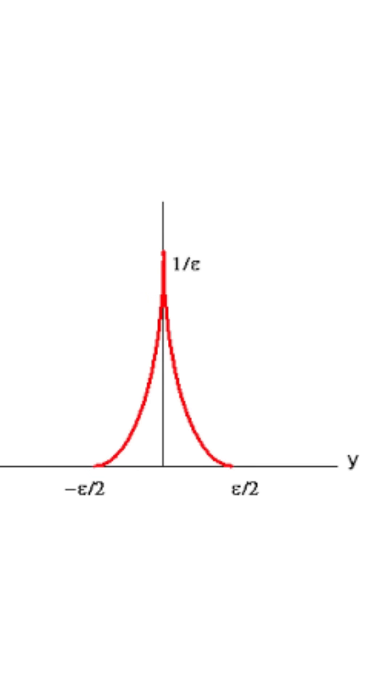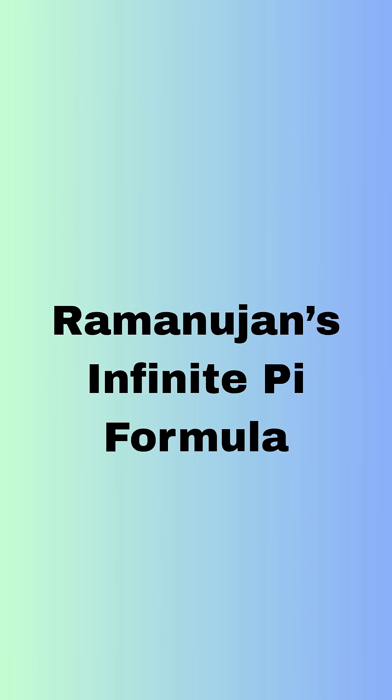Dirac delta function: you believe in extreme minimalism and wish all problems could be solved in one instant. Ramanujan's infinite pi formula: you think normal math is boring and prefer numbers that make people's heads hurt.